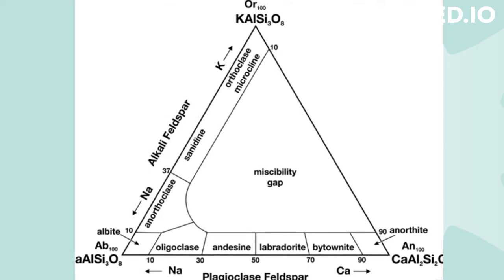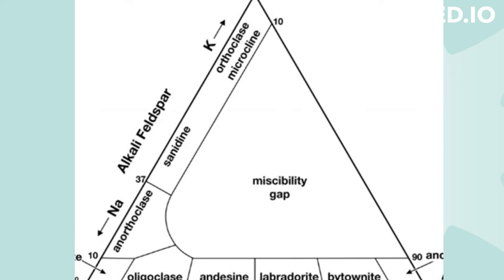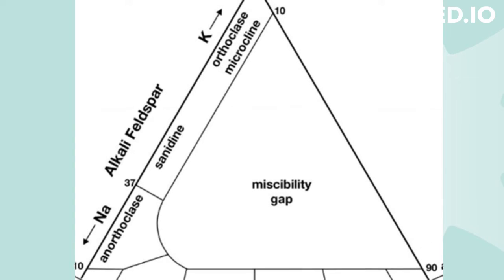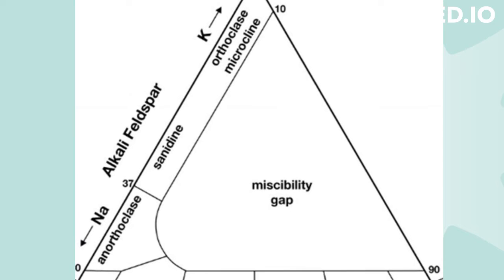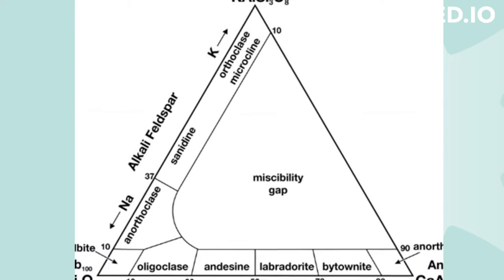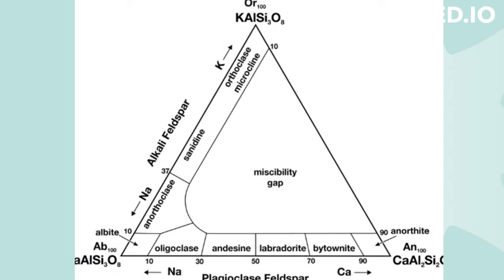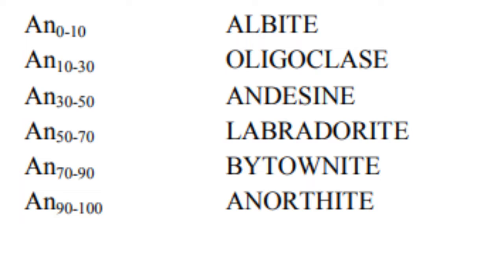Orthoclase and albite form a complete solid solution series known as the alkali feldspars, whereas albite and anorthite form a complete solid solution series known as the plagioclase feldspars. Plagioclase feldspar forms a complete solution series from pure albite to anorthite.